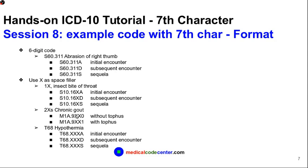For a 4-digit code, you place X in both the 5th and 6th positions, then add the 7th character at the end. For chronic gout, M1A.9: without tophus you have M1A.9XX0, and with tophus you have M1A.9XX1. For a 3-digit code like T68 (hypothermia), you add three X placeholders, giving T68.XXXA for initial encounter. The 7th character will always be in the 7th position.